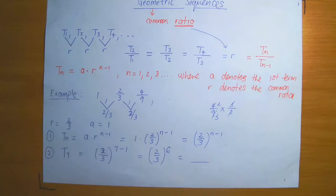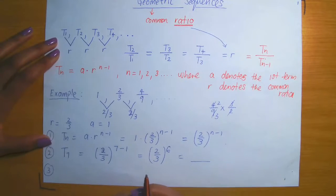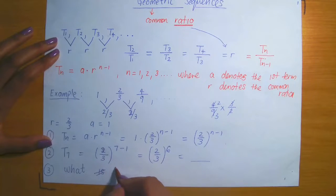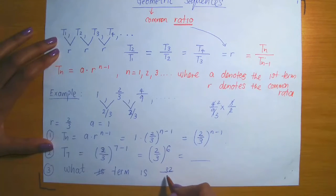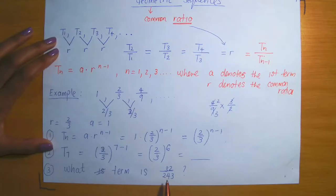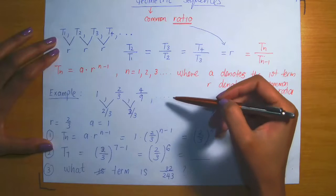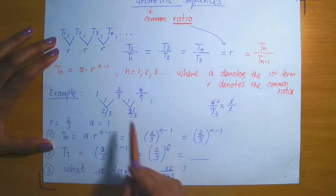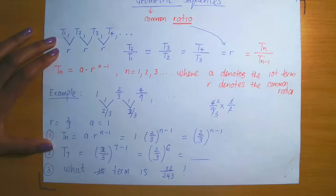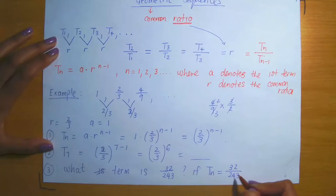What if I tested you in reverse — meaning I give you a number and tell you it's from the above geometric sequence, and I want to know which term it is in the sequence? Let's say: what term is the number 32/243? This number is a term in the original sequence, but I want to know exactly where in the list it will be found. This is the same as asking: if tn equals 32/243, then what is n?